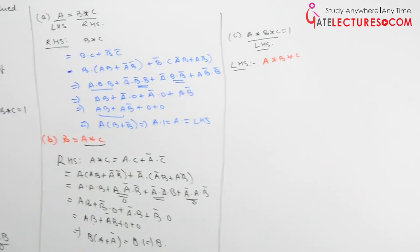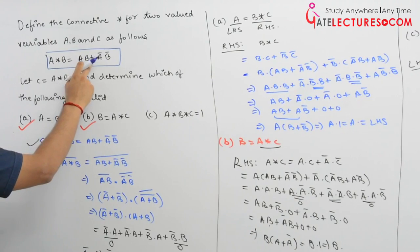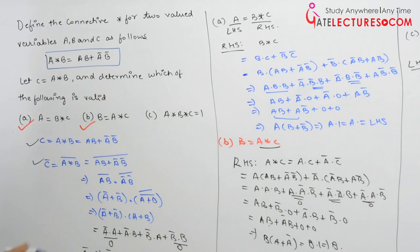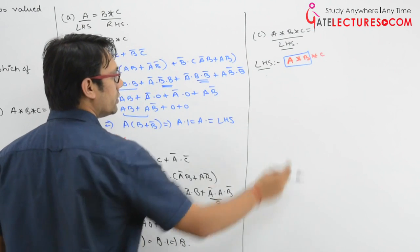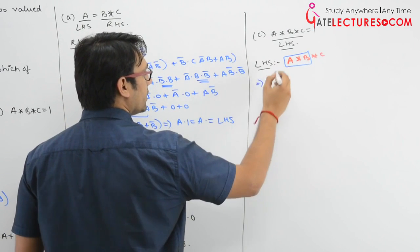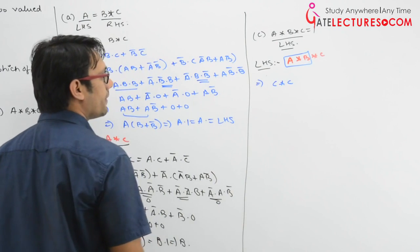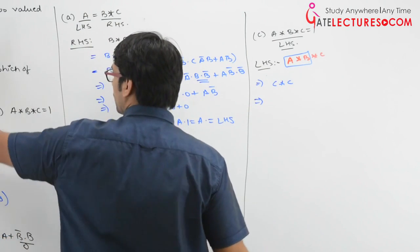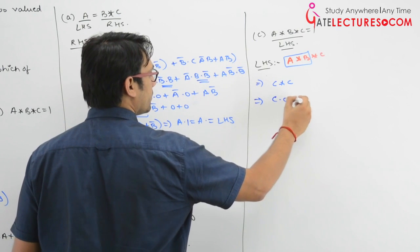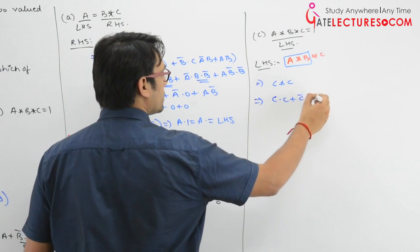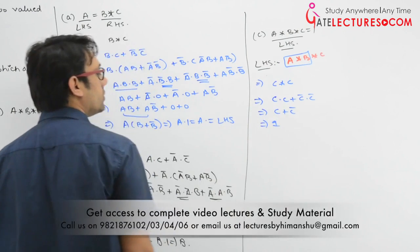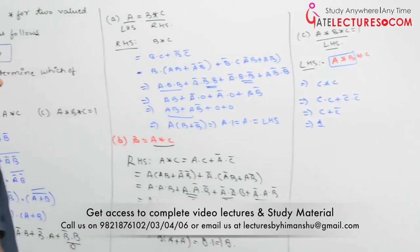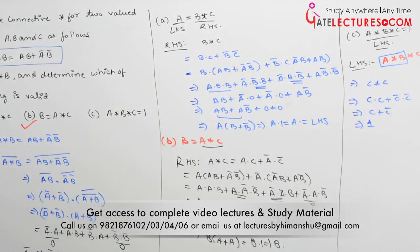Putting the values into c★c: c·c + c'·c' = c + c' = 1. So a★b★c = c★c = 1, which is the right-hand side. This is actually one of the easiest ones. So all three parts are valid.